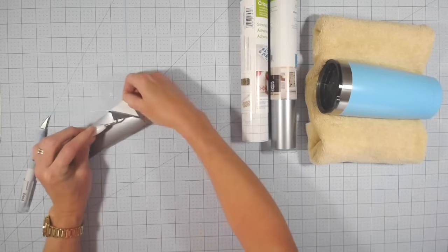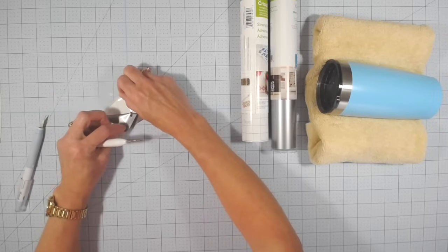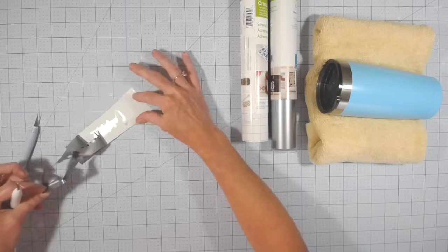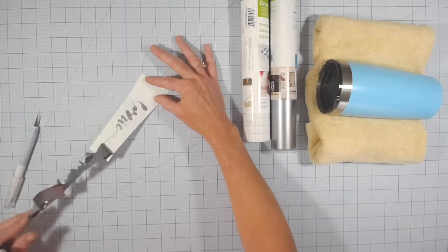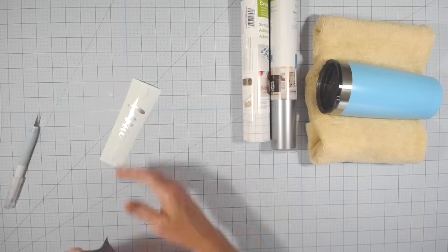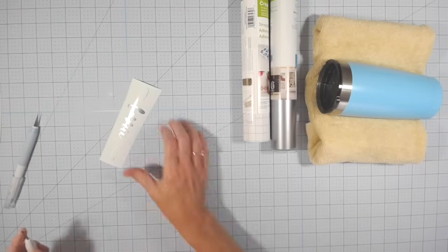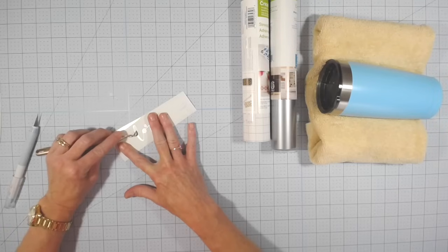Now we're going to weed it. Weeding is removing the excess vinyl around your design. So in this case I've cut my name and I am removing all of the extra vinyl that is around my name including the middle of the L, the O, and the middle of any of your letters, the E as well.